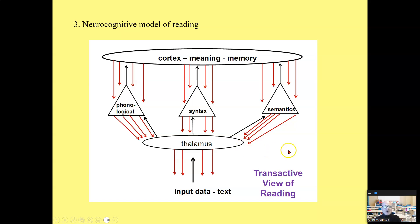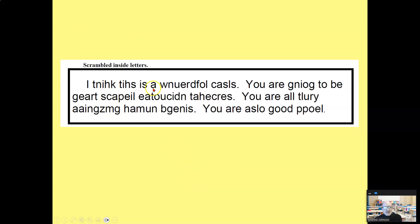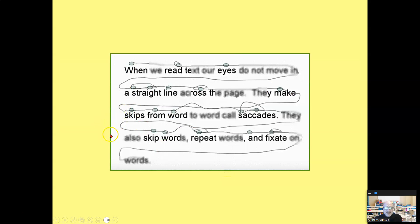Almost ten times more information is flowing down. Proficient readers use minimal letter clues — we can read text with all but the initial vowels removed: 'Once upon a time, there was a handsome prince.' We don't need every letter. Similarly, scrambled letters can still be read. When we read text, our eyes do not move in a straight line across the page. They skip — called saccades — and go back, called regressions. Where eyeballs land is called fixations.